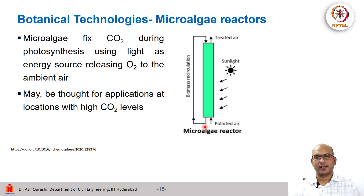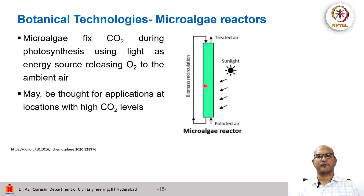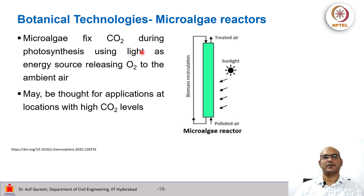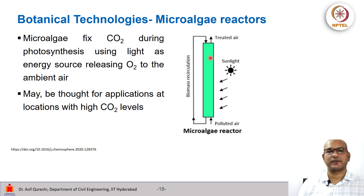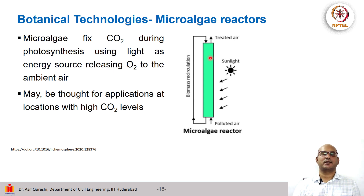Then we have microalgal reactors, in which biomass circulates from top to bottom, polluted air flows from bottom to top, and radiation in the sunlight band or even sunlight helps the microalgae fix CO2. This light enhances photosynthesis in the reactor, and O2 is released to ambient air. These microalgal reactors can be applied in places with high CO2 levels, such as highly occupied closed buildings, schools, or similar settings.